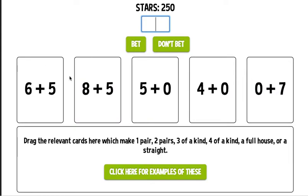This time I have 11, 13, 5, 4, and 7. Nothing worth betting. So I click don't bet.